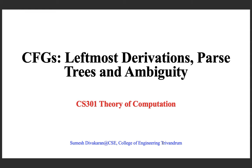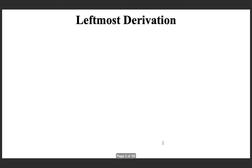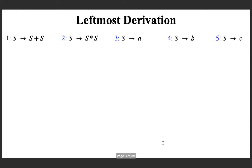Before we see what ambiguity in grammar is, let us try to understand what a leftmost derivation is. We can try to understand a leftmost derivation with an example. Here, an example context-free grammar is given with five productions. We can look at an example derivation.